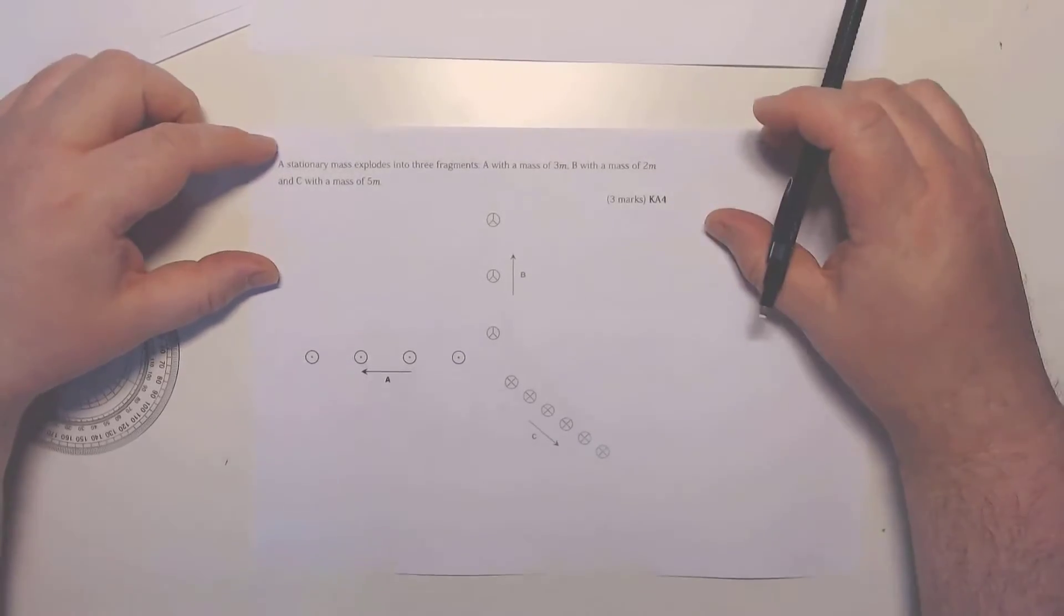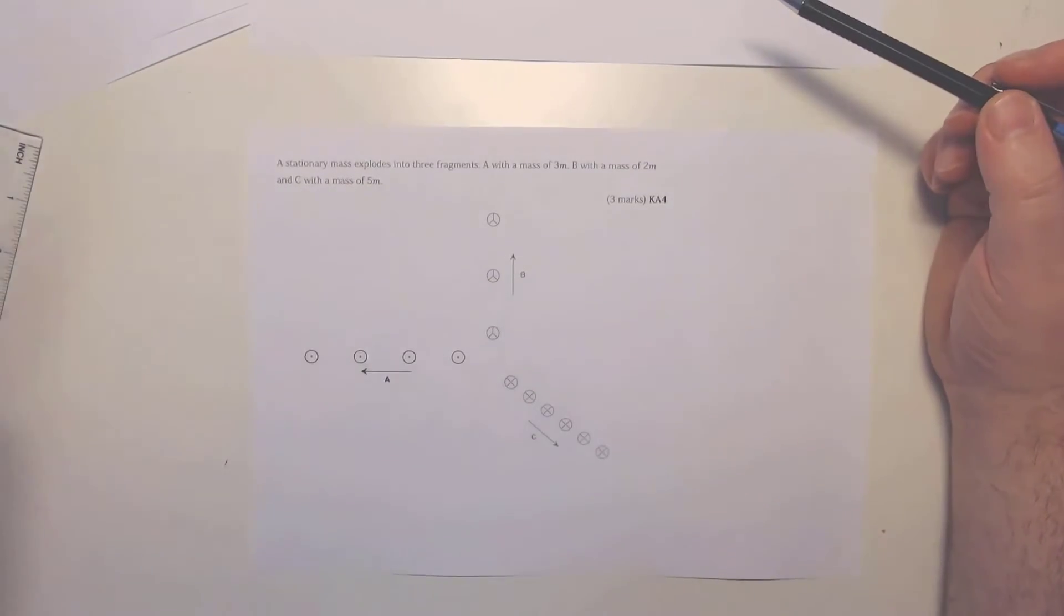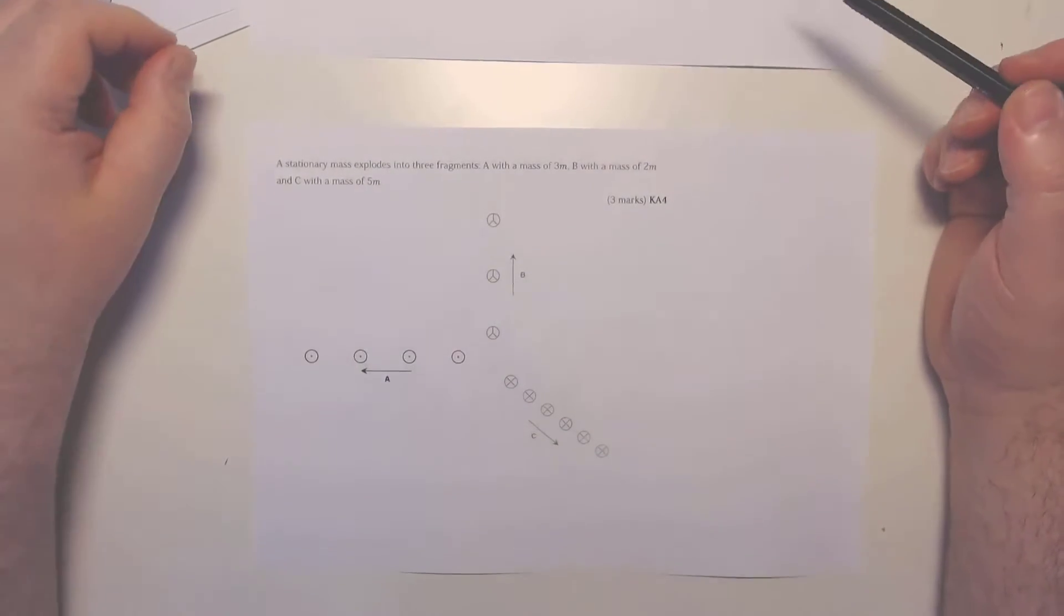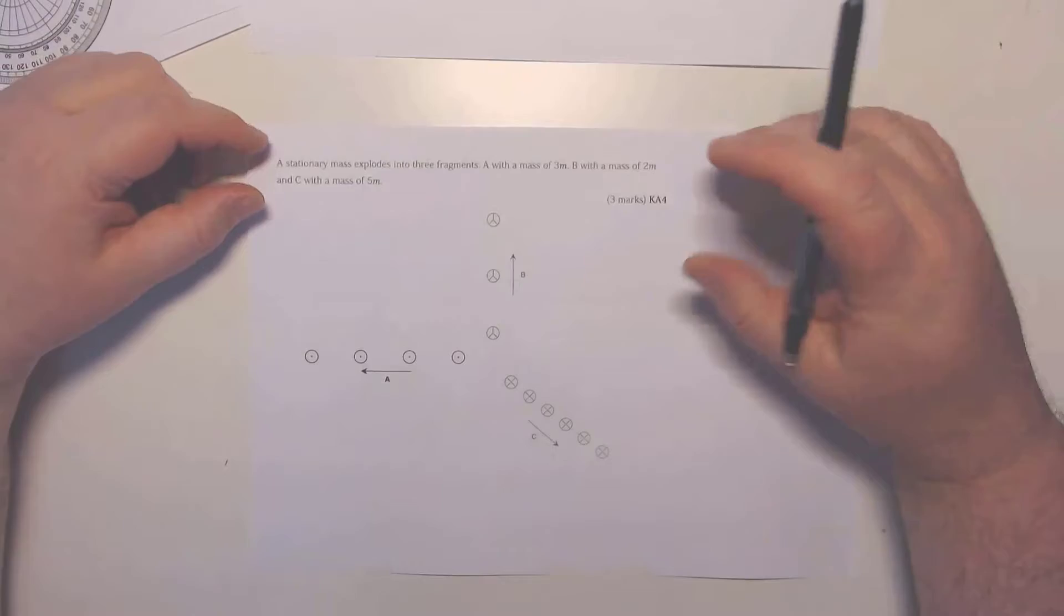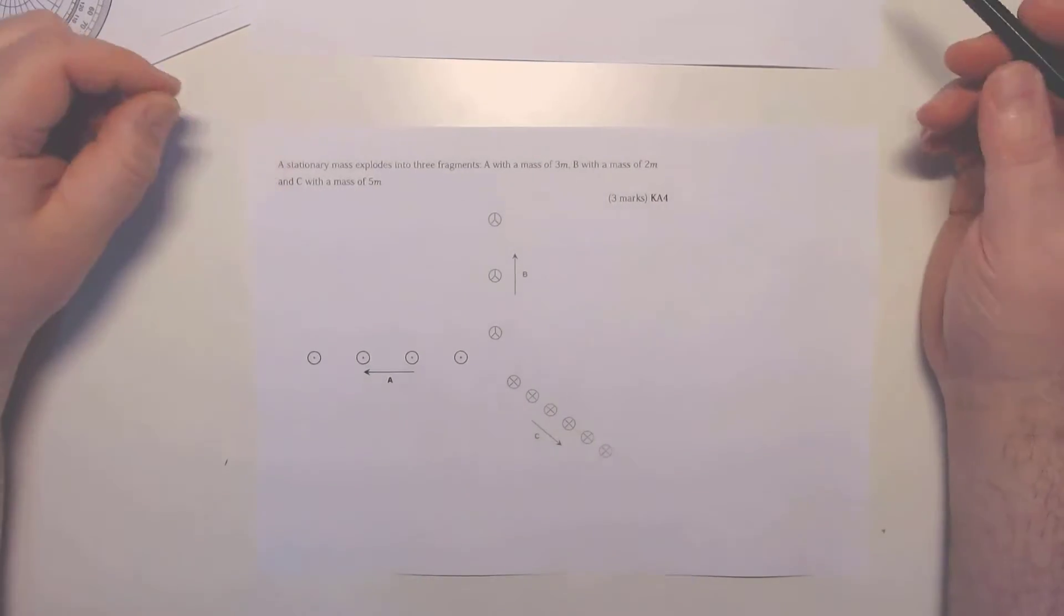Okay, so let's consider this question here. A stationary mass explodes into three fragments: A with a mass of 3m, B with a mass of 2m, and C with a mass of 5m. First, we need to work out from this image what the relative velocities are.